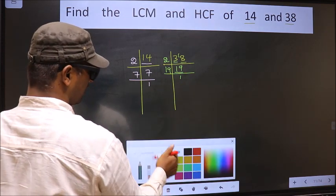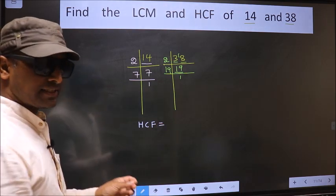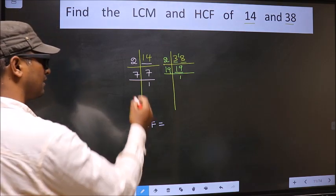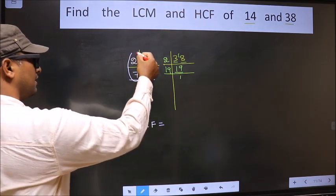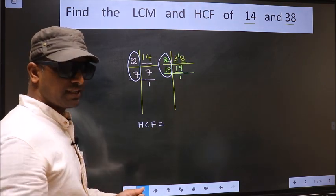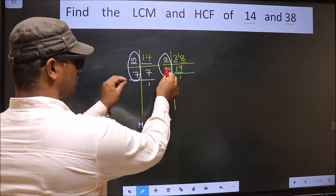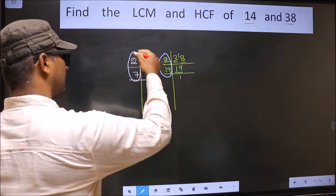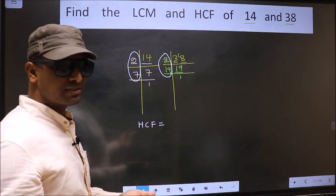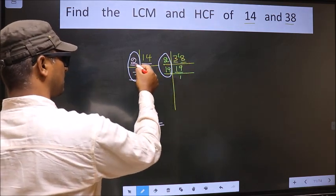So now our HCF is the product of numbers which should be present over here and also here. HCF is the product of numbers which should be present in these two places. So now let us find the numbers which are present here and here. Starting with the number 2.